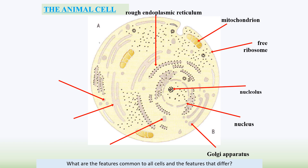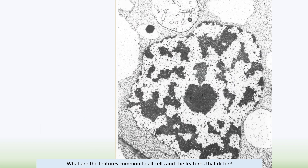Centrioles are involved in making spindles. The smooth endoplasmic reticulum — which everyone seems to forget — makes lipids. Lysosomes contain hydrolytic enzymes used in phagocytosis and digesting unwanted or unneeded parts of the cell.